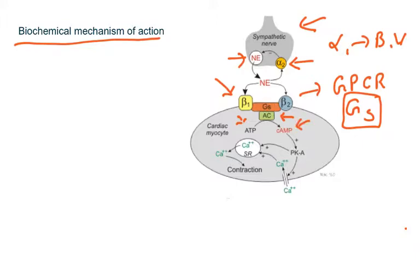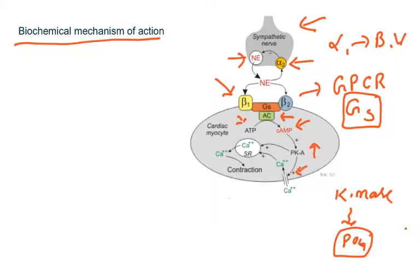Adenyl cyclase is an enzyme that converts ATP to cyclic AMP. Cyclic AMP activates protein kinase A — kinases are enzymes that attach phosphate groups. The activated protein kinase A phosphorylates the calcium channel on the cardiac myocyte, causing it to open so calcium enters. The calcium also activates the sarcoplasmic reticulum, which releases more calcium, and the increased calcium primarily causes contraction.